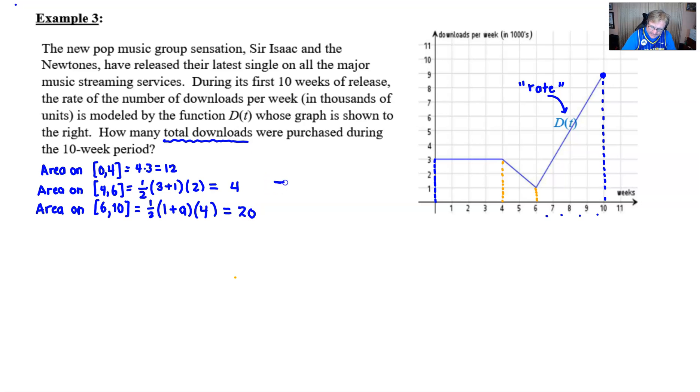Now if I sum all of these together, twelve plus four plus twenty, I end up with sixteen plus twenty, which is thirty-six. Of course the answer would be in terms of thousands, so I can either say the word thousand or I can add those three zeros, whatever you want to do. But there are thirty-six thousand downloads that were purchased in those ten weeks.